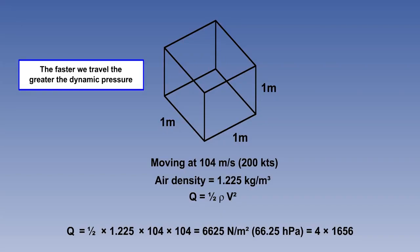If the speed is doubled, dynamic pressure will be 4 times greater, as the factor in the equation is speed squared. Half times 1.225 times 104 times 104 equals 6625 newtons per square meter, or 66.25 hectopascals.